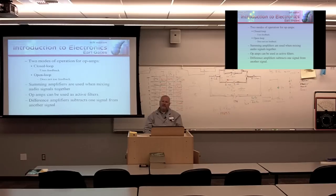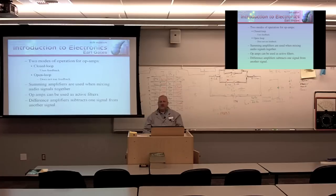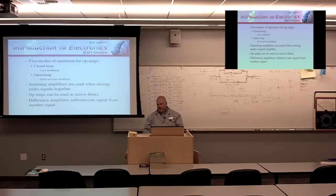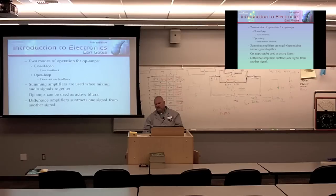There are two modes of operation for op amps: closed loop and open loop. These terms are used throughout the electronics industry and other technical fields. Closed loop means it uses feedback, which increases stability. Open loop does not use feedback, and there are some configurations where we won't use feedback with an op amp.